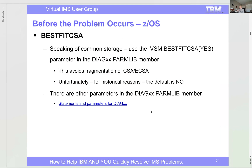There was a new ZOS parameter called BESTFIT CSA. A previous ZOS release changed how CSA and SQA were allocated — choosing the first chunk that fit rather than looking for a good spot — causing fragmentation. They added this parameter to restore best-fit behavior, but for historical reasons the default is NO. Please make sure you set VSM BESTFIT CSA=YES in your DIAG parameter. Very important.